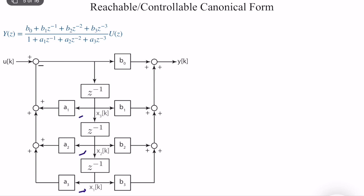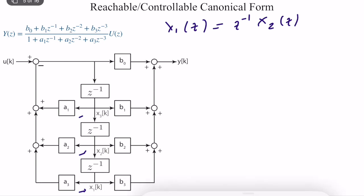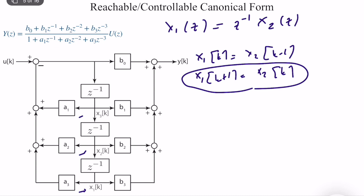We derive the state-space representation from this block diagram form. Starting with x1: in z-domain, X1(z) = z^{-1}·X2(z). Transforming this to time domain: x1(k+1) = x2(k), since k is arbitrary. Similarly for x2: X2(z) = z^{-1}·X3(z), which gives x2(k+1) = x3(k). So we have two simple equations.